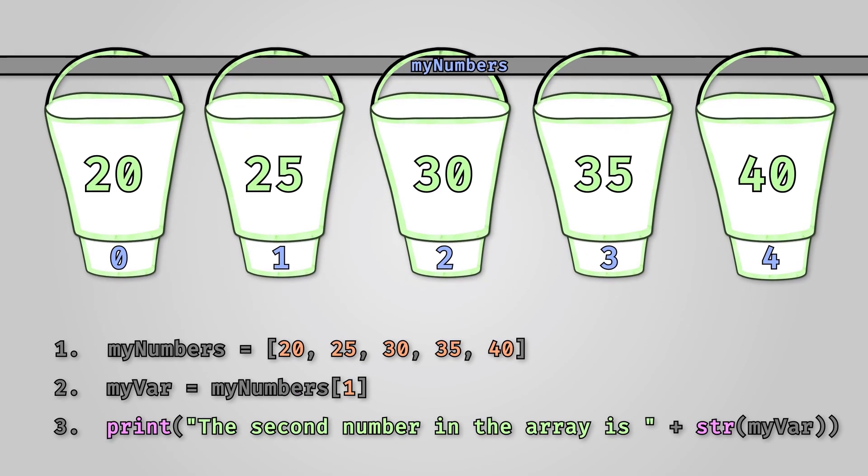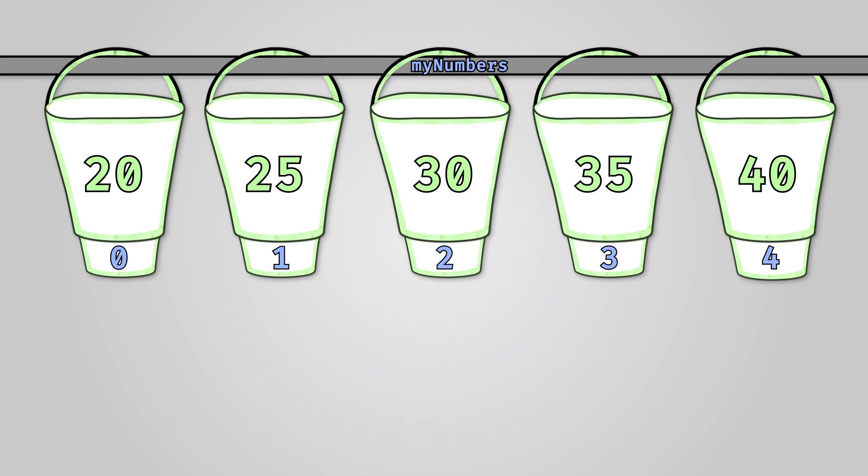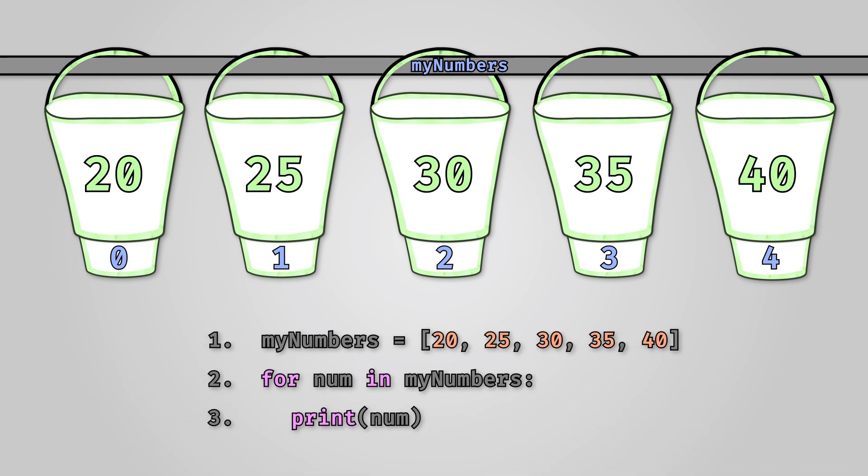Of course you may want to output the entire contents of an array. The simplest way of doing this is through the use of a for loop. The key part to this Python code is this line. This will loop through each element of the array with num storing the value of the current element selected. We then print out the value stored in num on line 3.